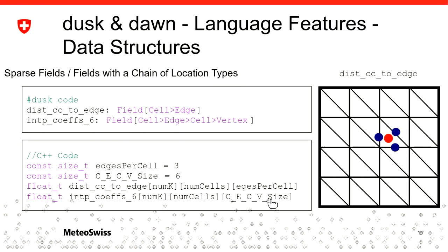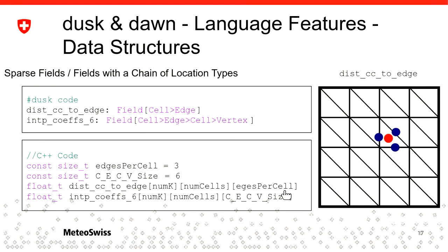Now say you want to store distances between cell centers and their adjacent edges — adjacent to each cell of your domain. It's not enough to store one value per cell, because each cell has three neighboring edges. Therefore you would use this notation to express what we call a sparse field. In C++, this corresponds to adding another dimension called the sparse dimension. On a triangular mesh this is always of size three since each cell always has three edges.